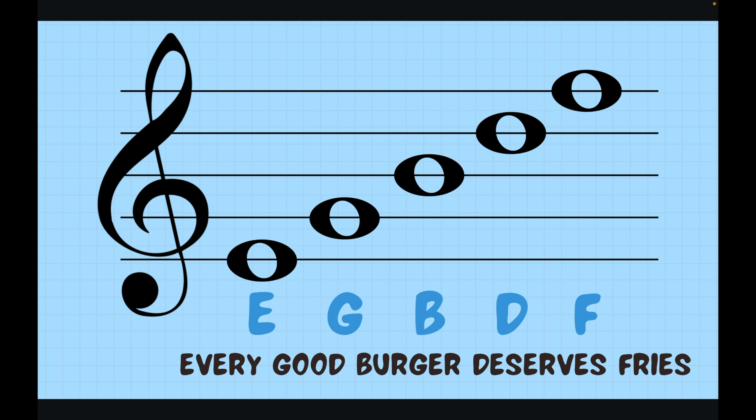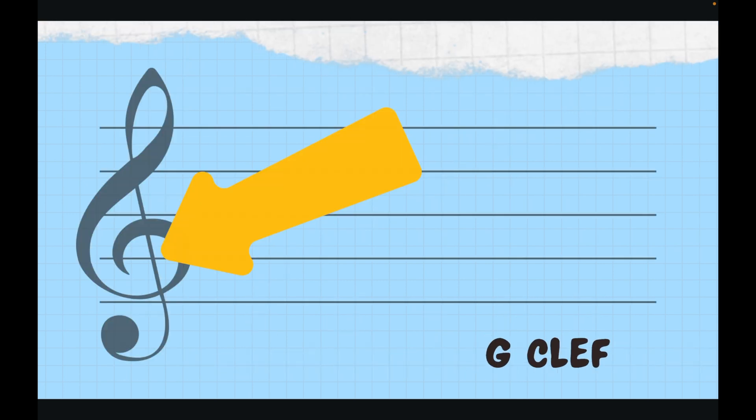Now that we've taken a look at our notes, we're going to look at something really cool with the treble clef. The treble clef is also known as the G clef. Just like we did before with the lines it goes bottom to top: every, good, and as you can see the arrow is pointing to G where the little swirl of the treble clef goes around G. That is why the treble clef is called the G clef.